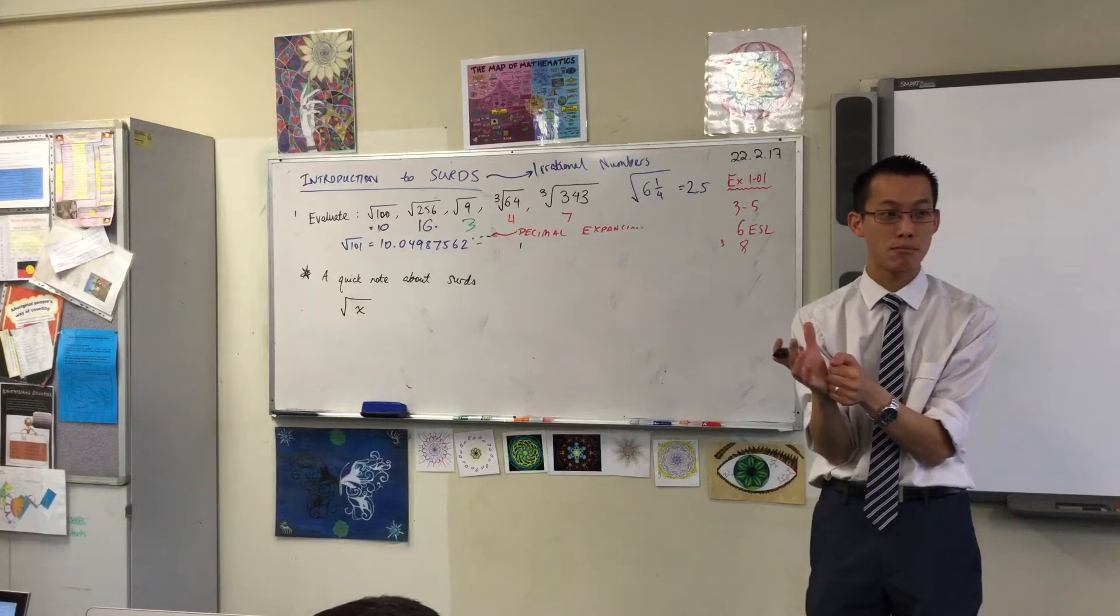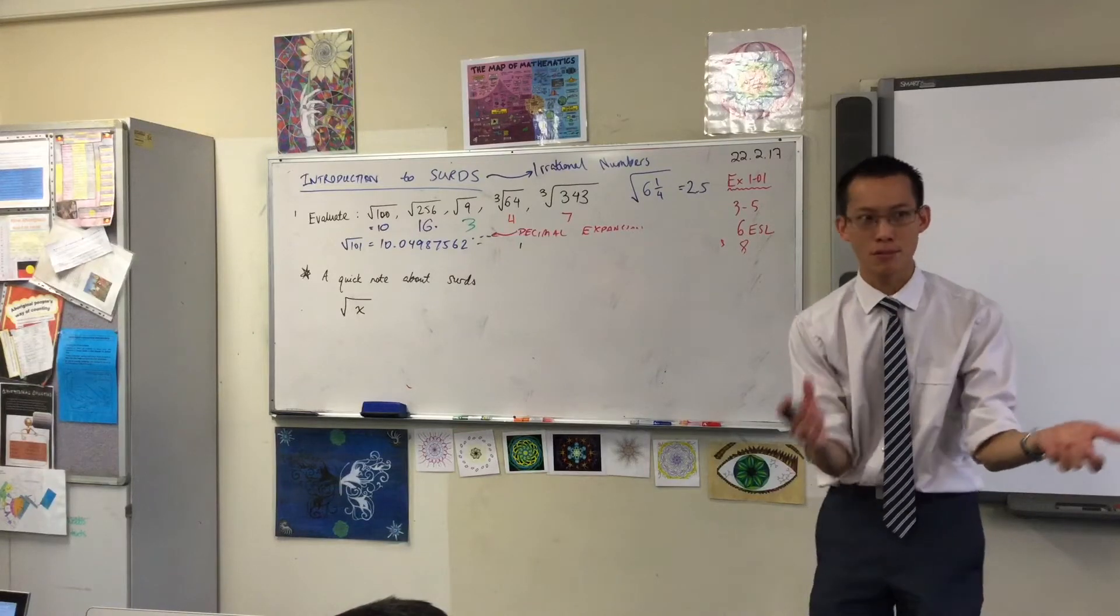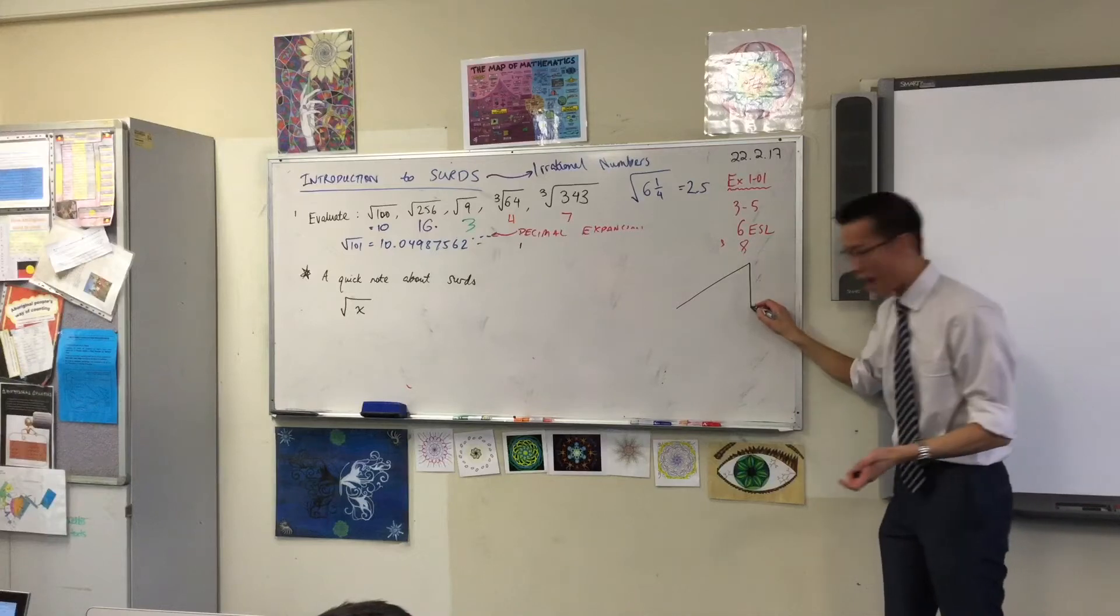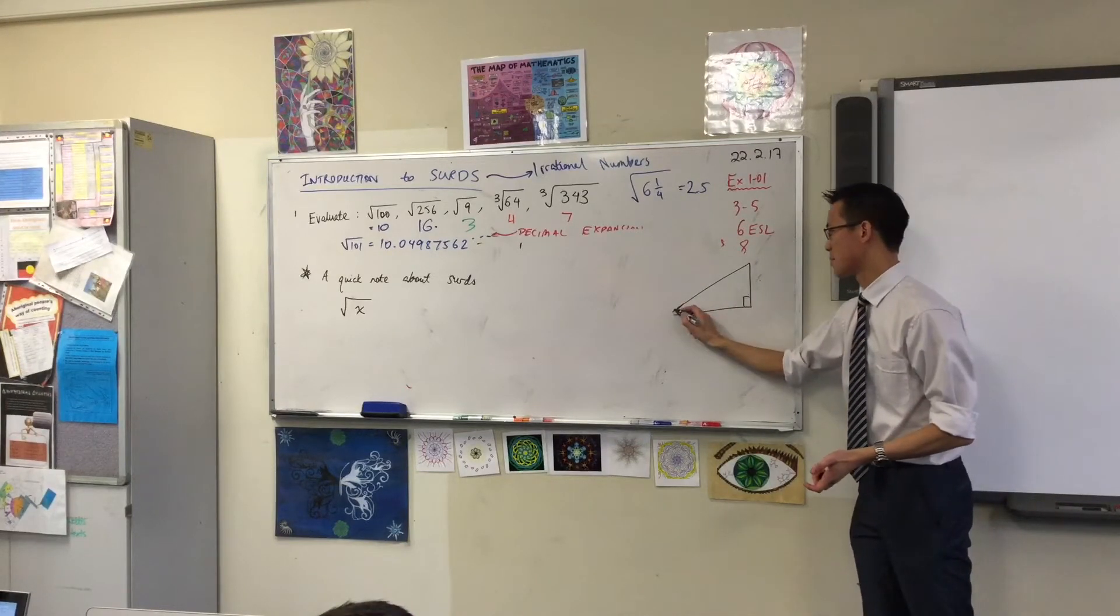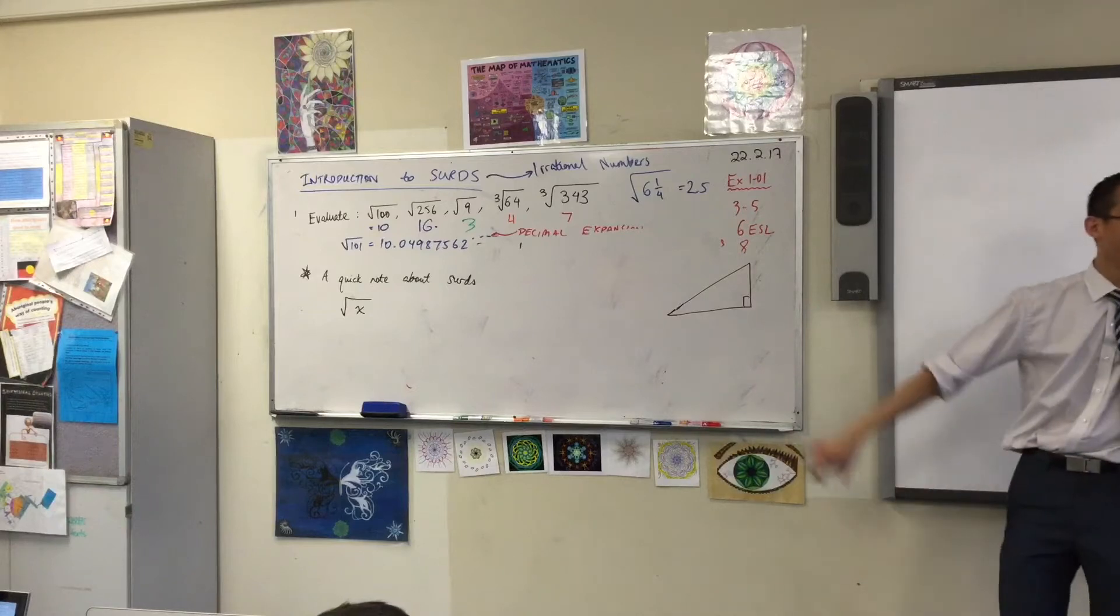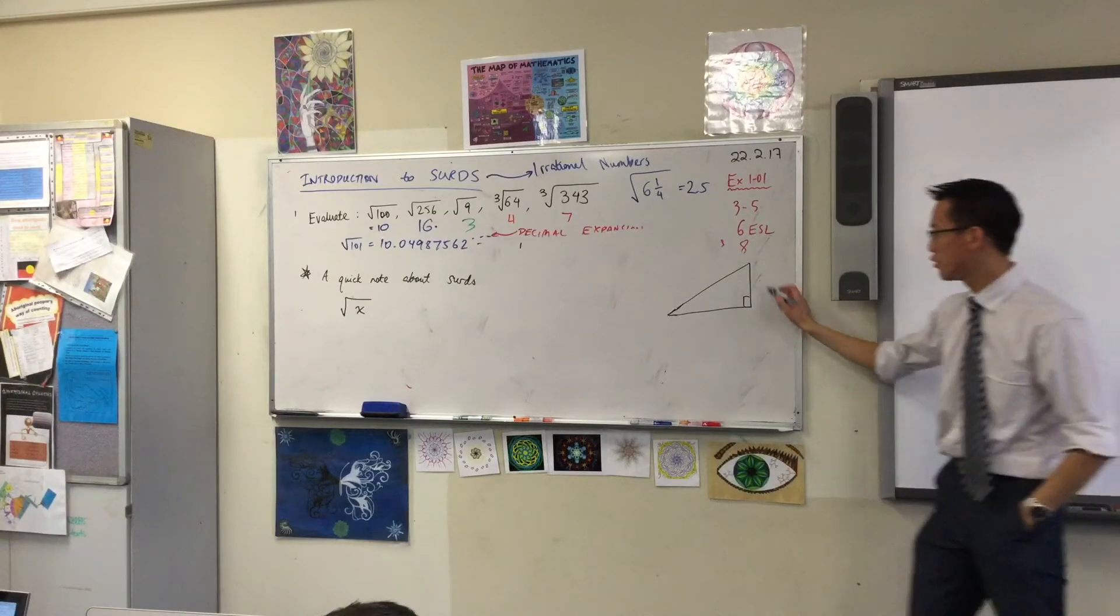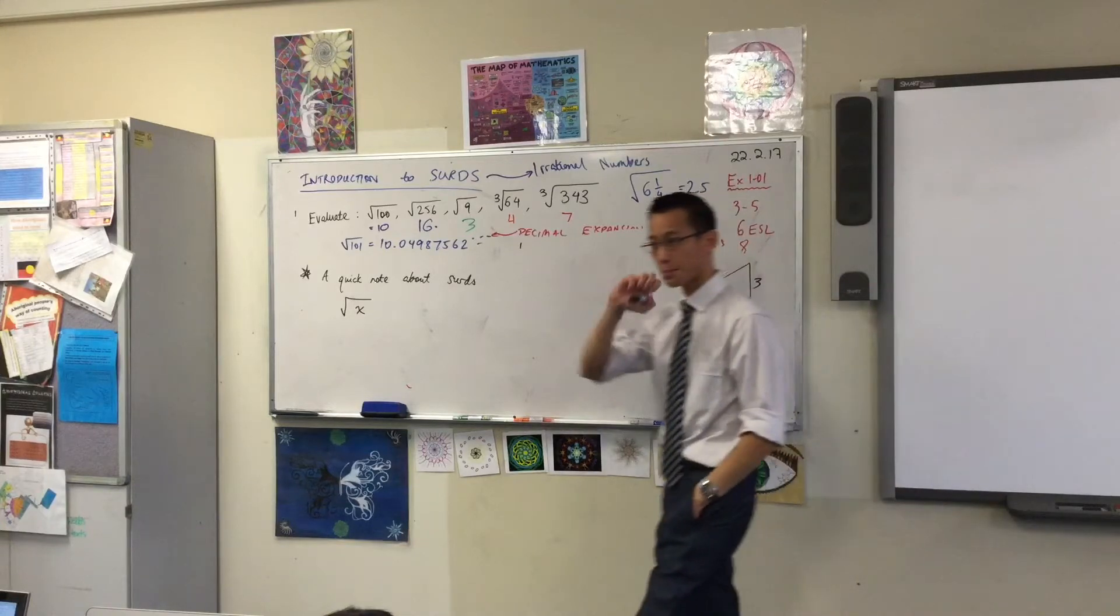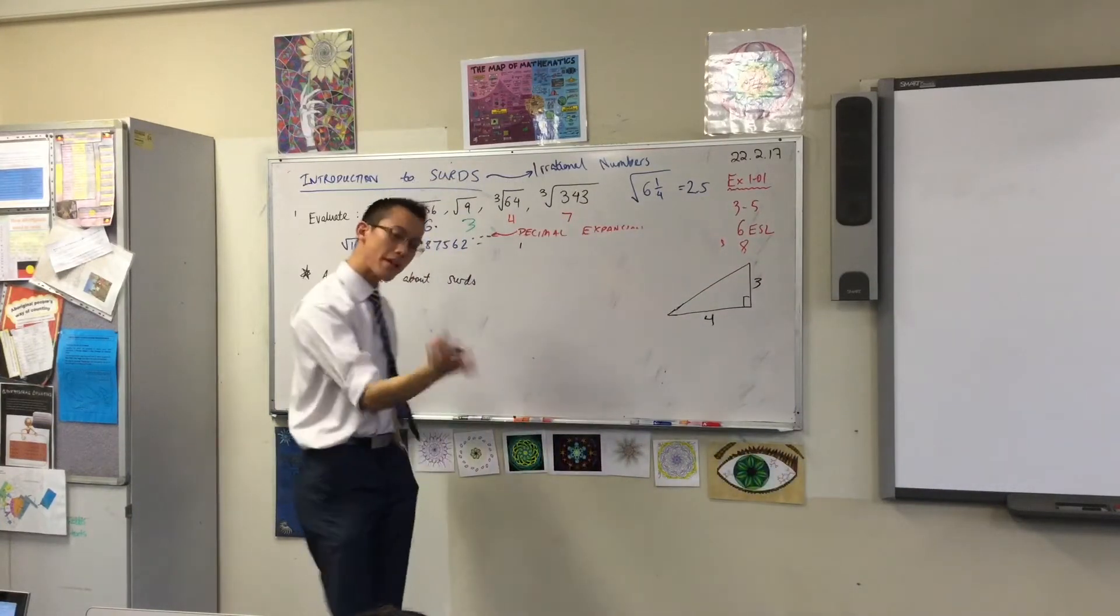The reason why is you've actually been doing square roots for a really long time attached to a particular kind of shape. Does anyone remember what kind of shape requires square roots? Let me give you a bit of a hint. If you have a right angle triangle, right, let's make it a triangle here we go.